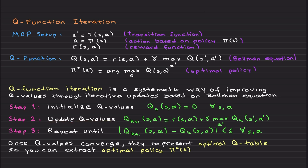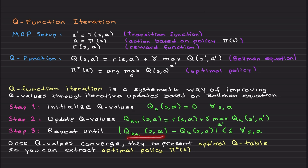Step two: we update the Q values. The next value Q_{k+1} comes from the immediate reward plus gamma times the discount factor times the max over a-prime of Q_k at s-prime and a-prime — using the previous value of Q_k to update Q_{k+1}. Step three: we repeat until convergence. Convergence is captured when the difference between Q_{k+1} and Q_k is less than epsilon for all state-action pairs. Once the Q values converge, they represent the optimal Q table, and you extract the optimal policy using argmax.